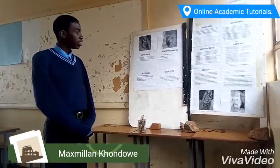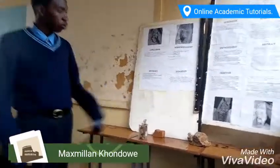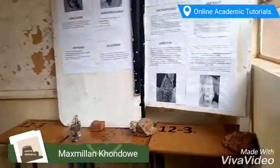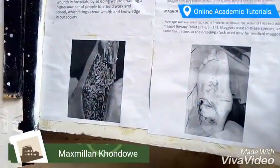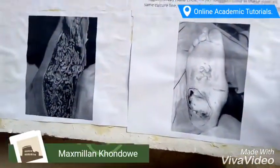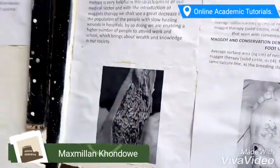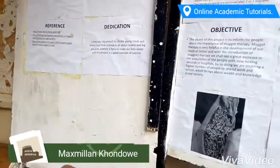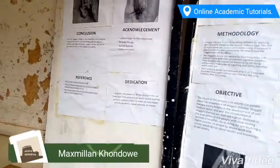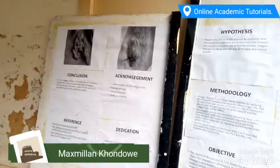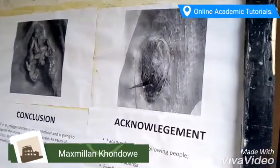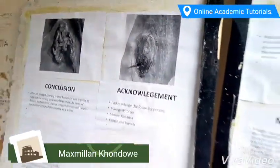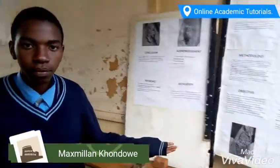Maggots have the ability to feed on decayed matter, also known as bacteria. As you can see in this picture, the person has been treated with fly larvae, also known as maggots, which helps to enhance wound healing and make wounds heal faster.